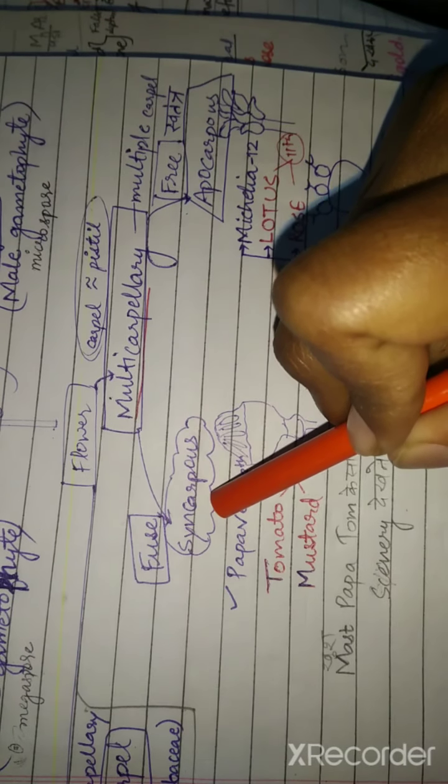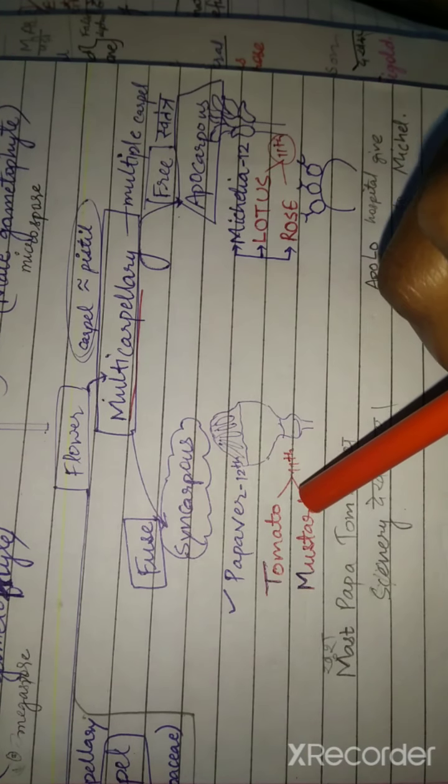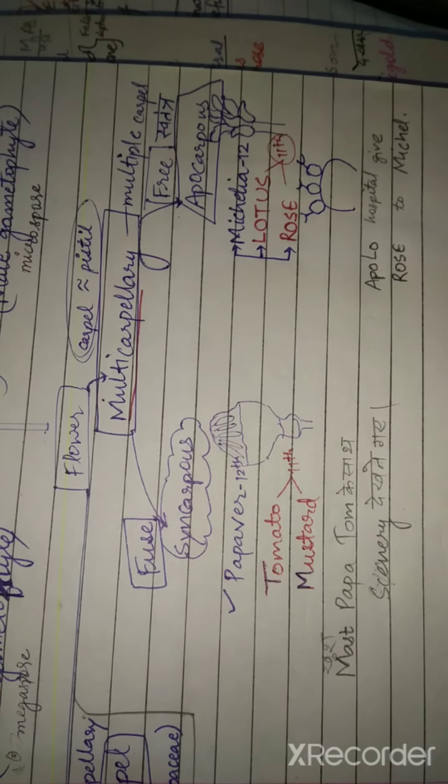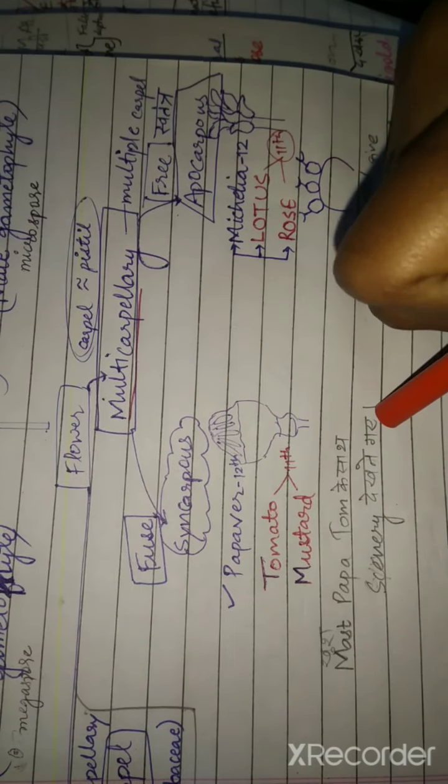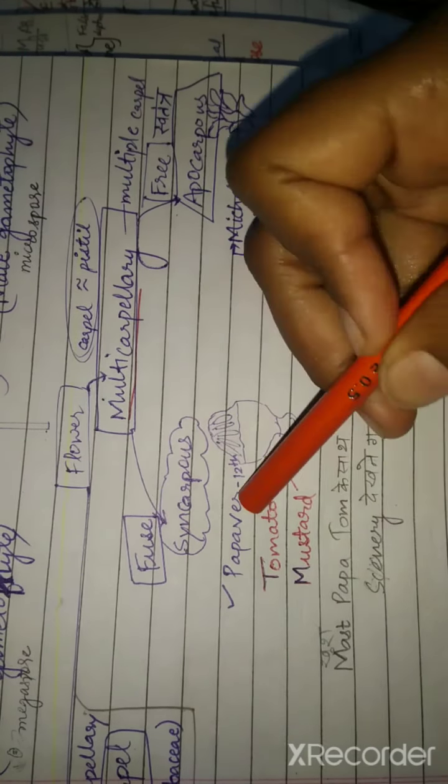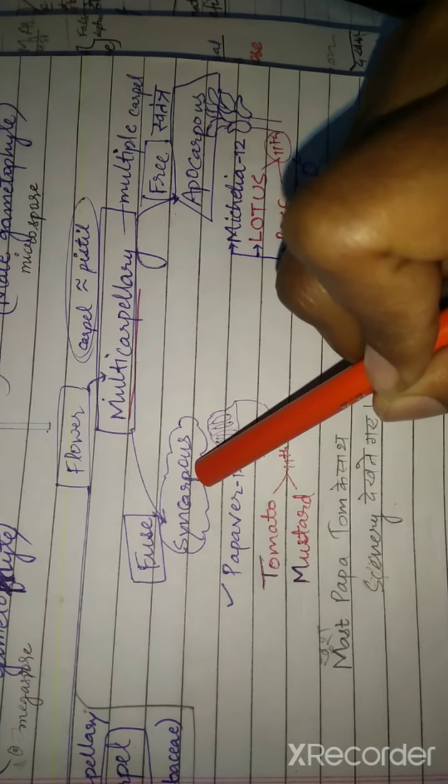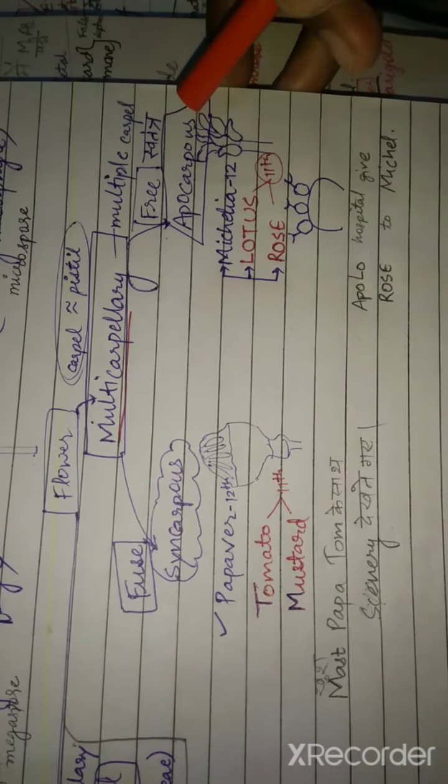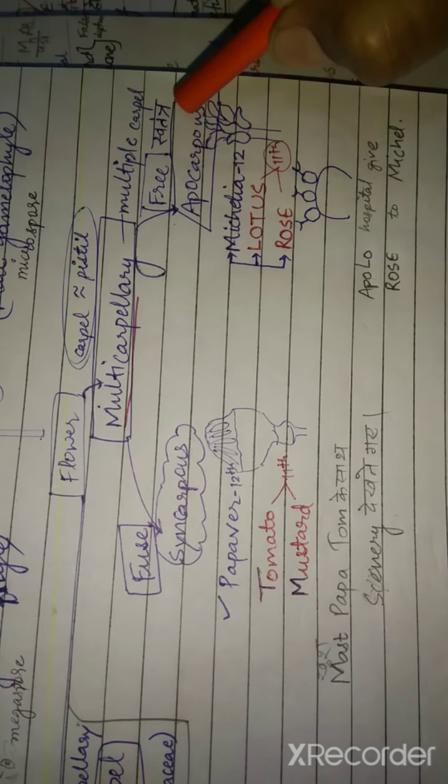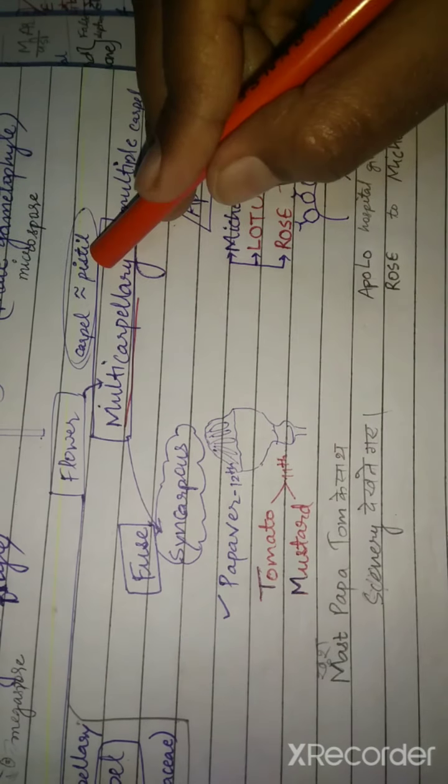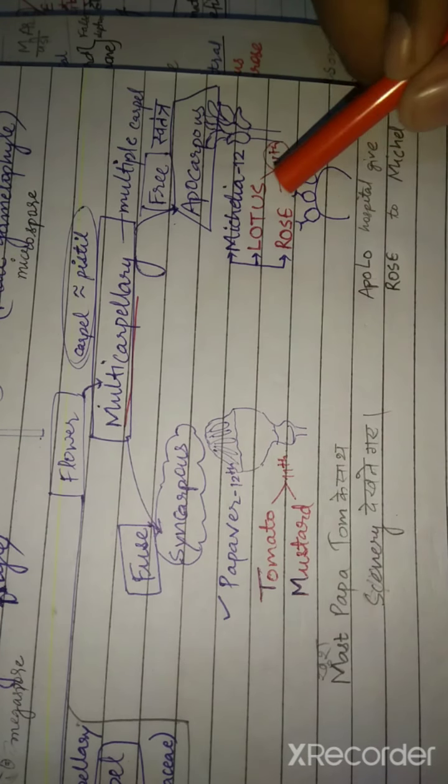Fused carpel we call syncarpus - example from 12th is tomato and mustard. Free carpels are called apocarpus. This is from 12th, example is Michelia, and from 11th, examples are lotus and rose.